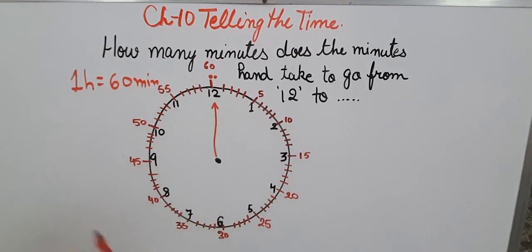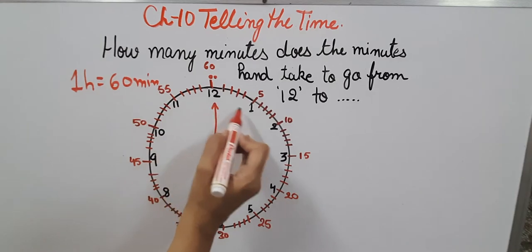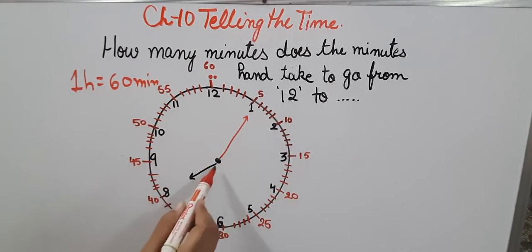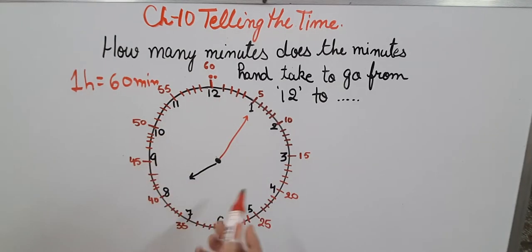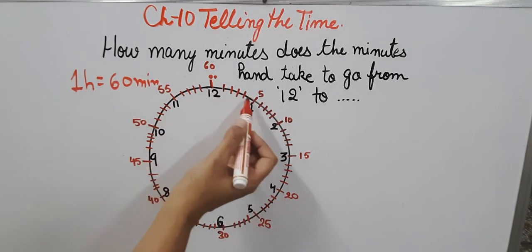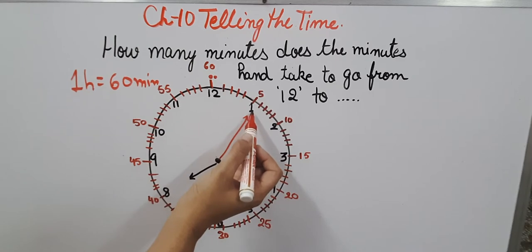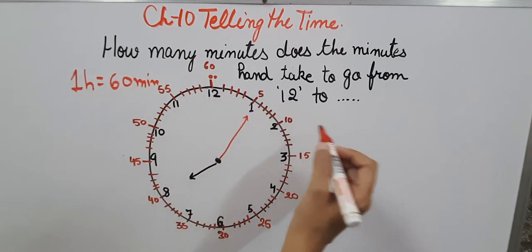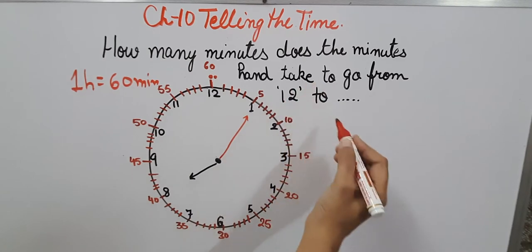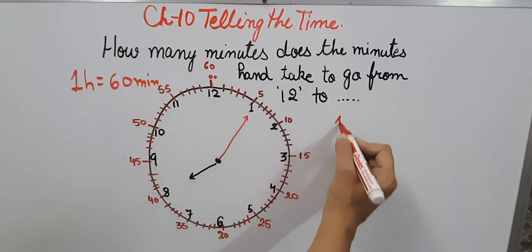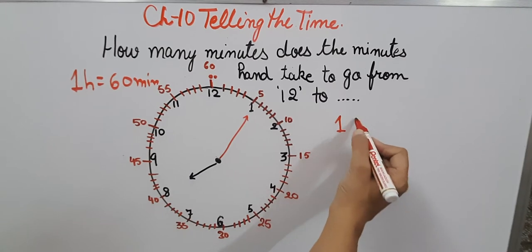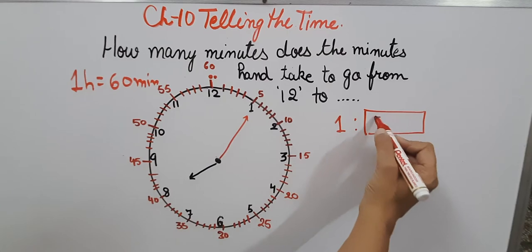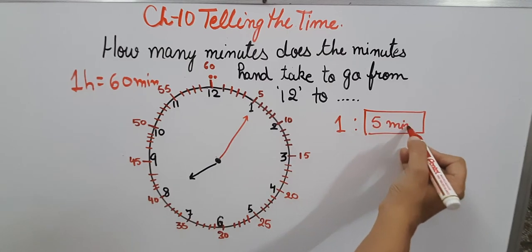Now if we are asked how much time will the minute hand take to reach from 12 to 1, we have fixed the hour hand at 8 and we will see that. We know that if it is reaching 1, it will take 5 minutes to reach there. I will write it as 5 minutes.